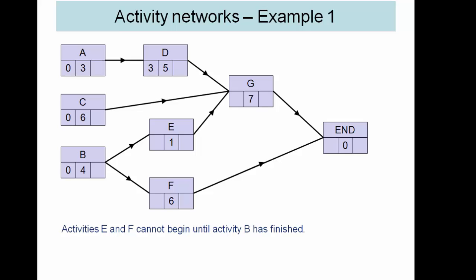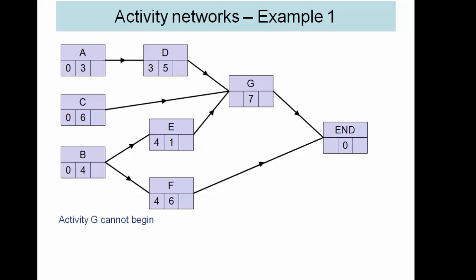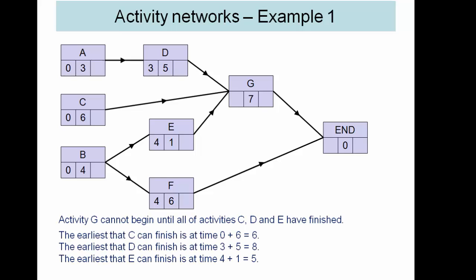E and F require B to finish so that will be the earliest time of four. G requires C, D and E to finish. So C finishes, the earliest C can finish at six. D requires both A and D so that's eight. E is five. So we take the latest of these because it requires all three to have completed.